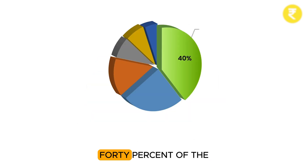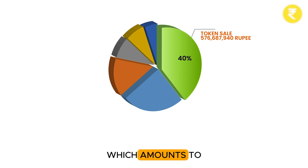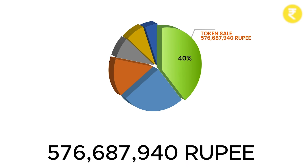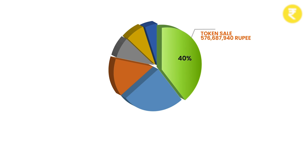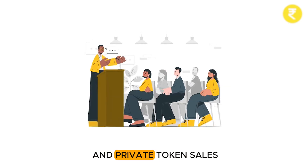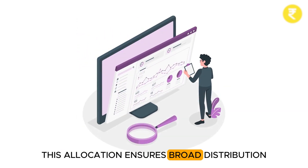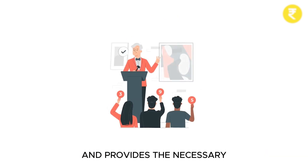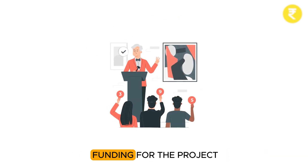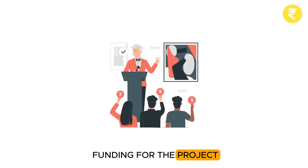40% of the total supply, which amounts to 576,687,940 rupee tokens, is allocated for public and private token sales. This allocation ensures broad distribution and provides the necessary funding for the project.